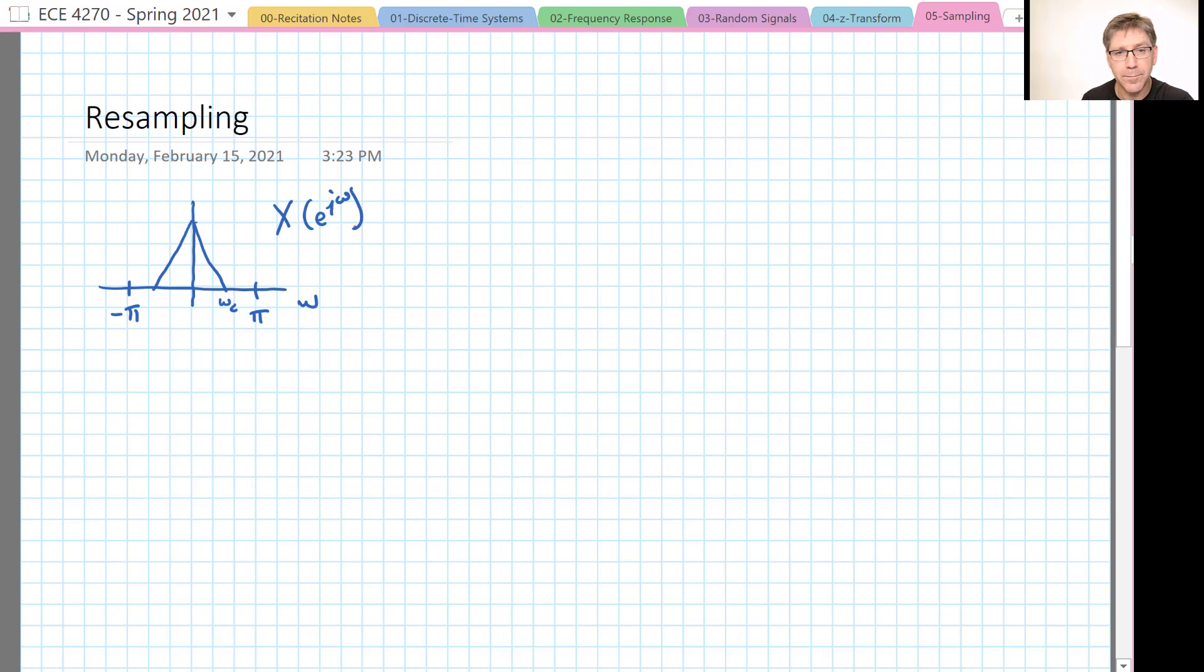To do resampling, and in this particular case up-sampling, we'll put x of n into an up sampler and a low-pass filter. We'll describe the characteristics of that low-pass filter in just a moment.